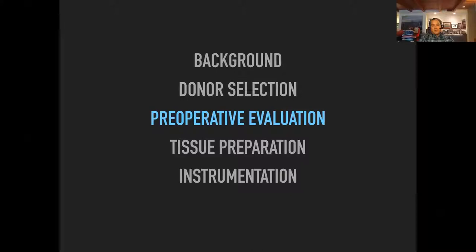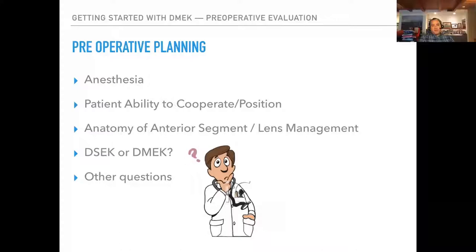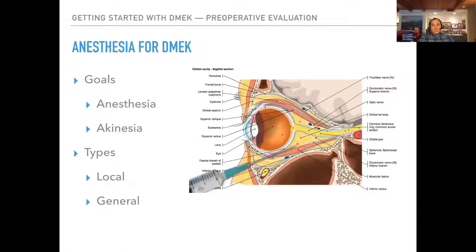When a patient has endothelial dysfunction, preoperative planning starts with anesthesia. Can the patient cooperate and position if needed because of the air bubble? What does the anterior segment look like — is the patient phakic, pseudophakic, aphakic? Should I do DSAEK or DMEK? The anesthesia I use for DMEK is peribulbar anesthesia, with the goal that the patient is comfortable and the eye is not moving.